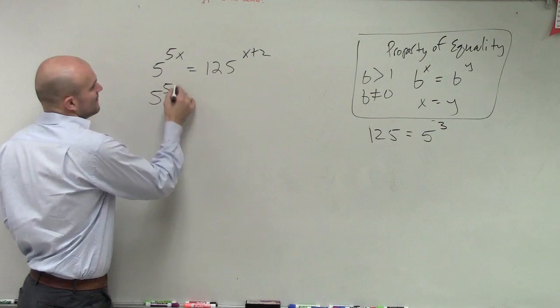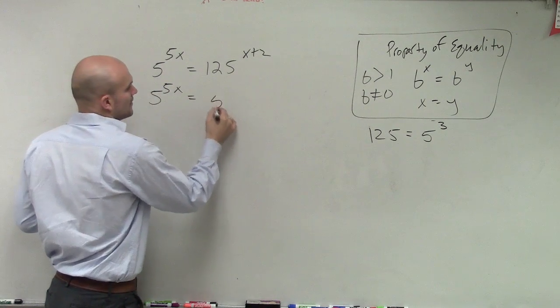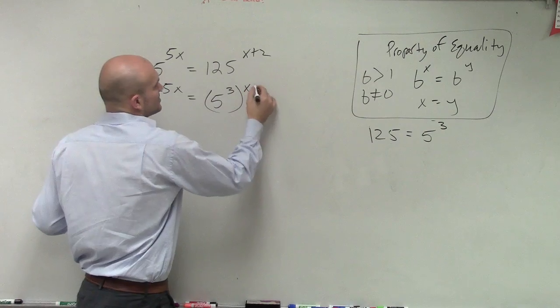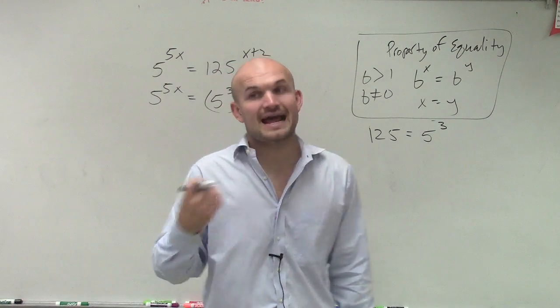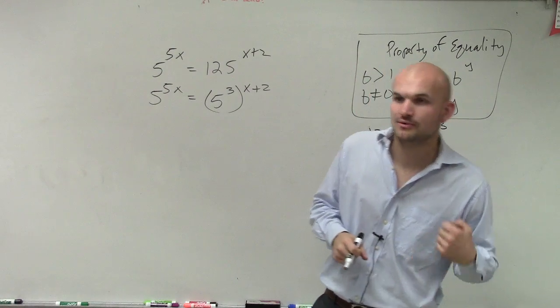So now I rewrite this as 5 to the 5x equals 5 to the 3 raised to the third power times x plus 2. Now, remember, power of power, we're not going to add the exponents, but now we're going to multiply.